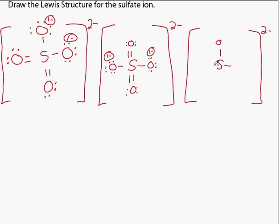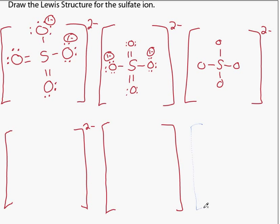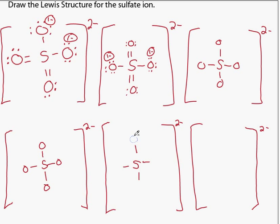We will quickly draw the remaining resonance forms by drawing in the frameworks first. Each Lewis structure will be enclosed in brackets and have a charge of minus two. Sulfur in the center connected to four oxygens. And then go back and place the double bonds. And then complete the octet for each atom and label each with its formal charge where appropriate.